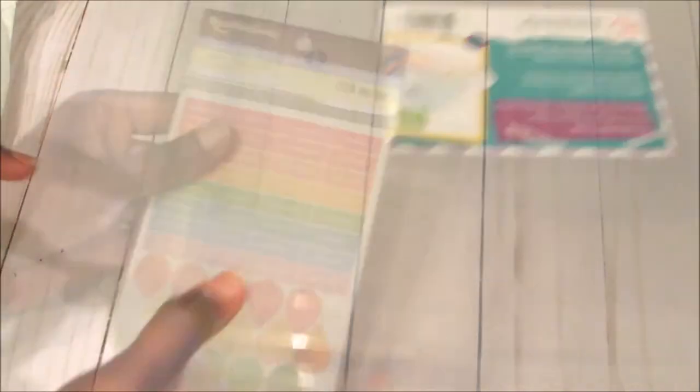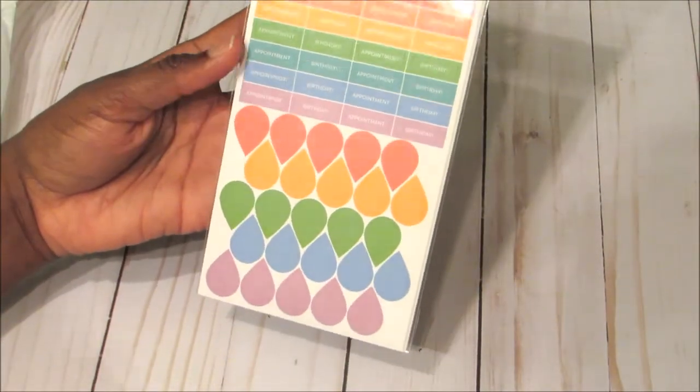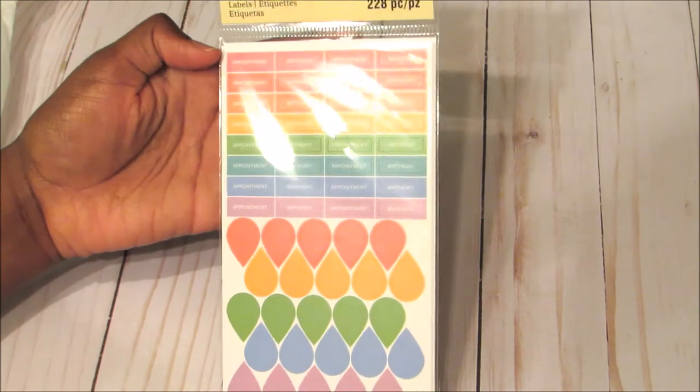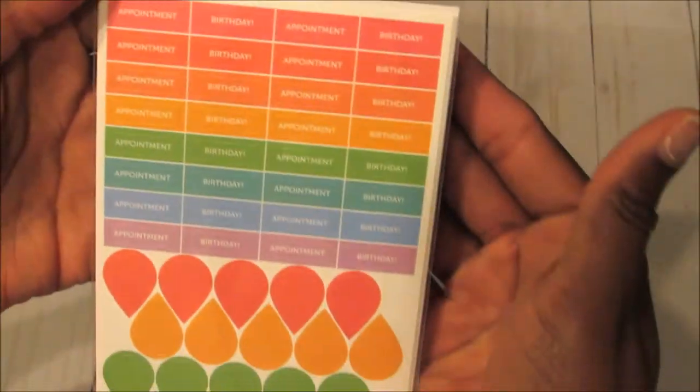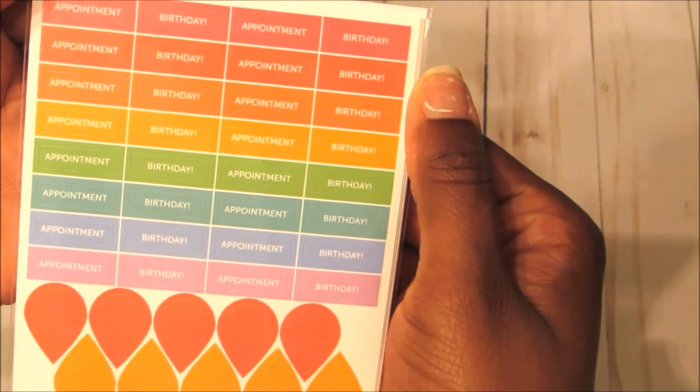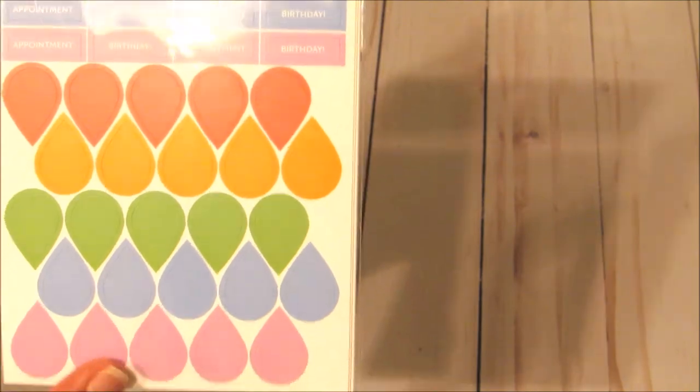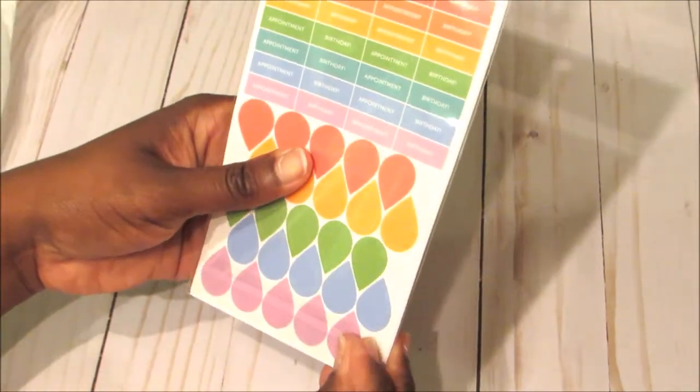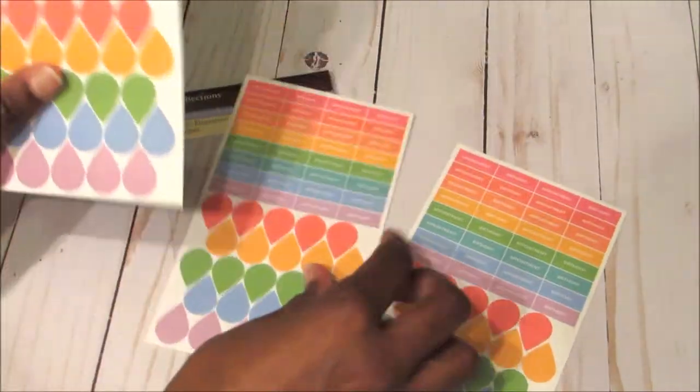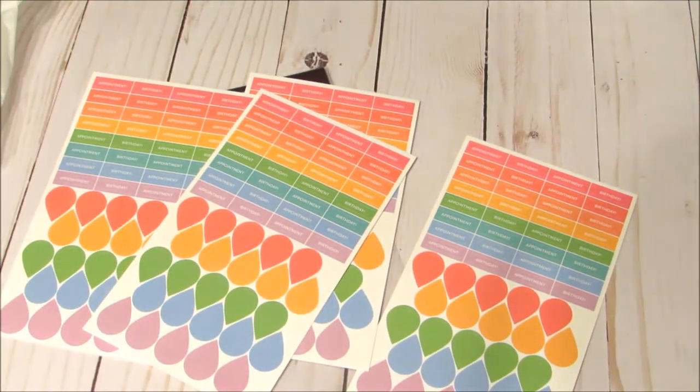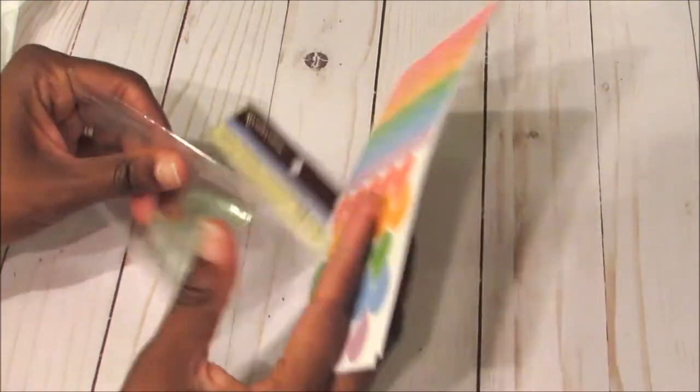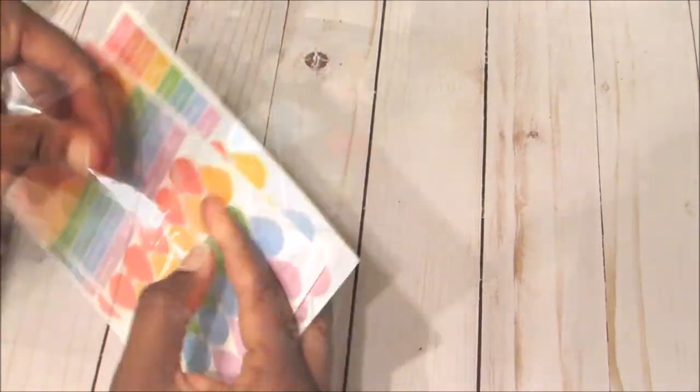And these stickers are labels by Recollections and you get 228 pieces in there. And I must say I love these because it says here on them different appointment labels and things like that. And then it has these nice little teardrops that you could use for any type of planning there. Let me just open it so you guys can see exactly how many sheets you're going to get. So you get one, two, three, four. So you get four sheets in this whole pack. That's a pretty good deal. It was originally I think $2.99 and I got 60% off. So it was super duper cheap. So I got this.